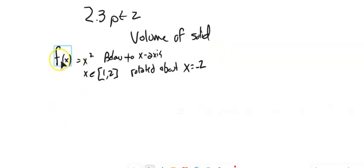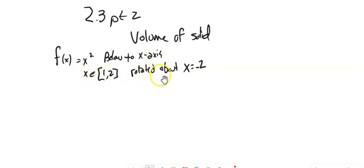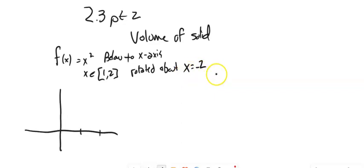Let's start with this one. We have the function f(x) = x², running from x = 1 to 2, going from the x-axis down to the y-axis. It's going to be rotated around the line x = negative 2. So x runs from 1 to 2, and it's x-squared, so that's that part right there.